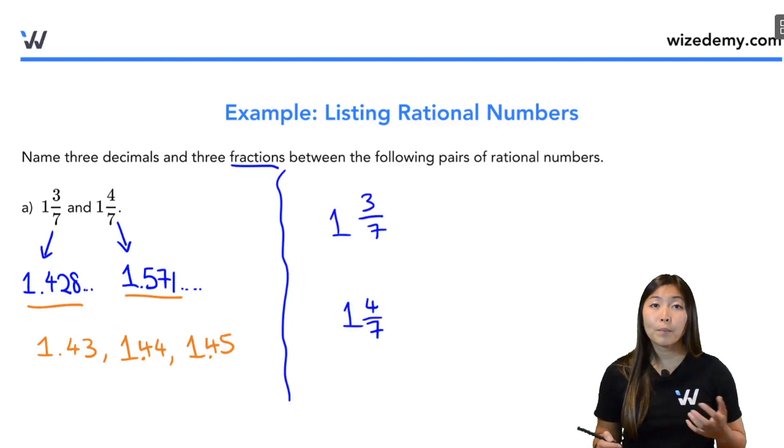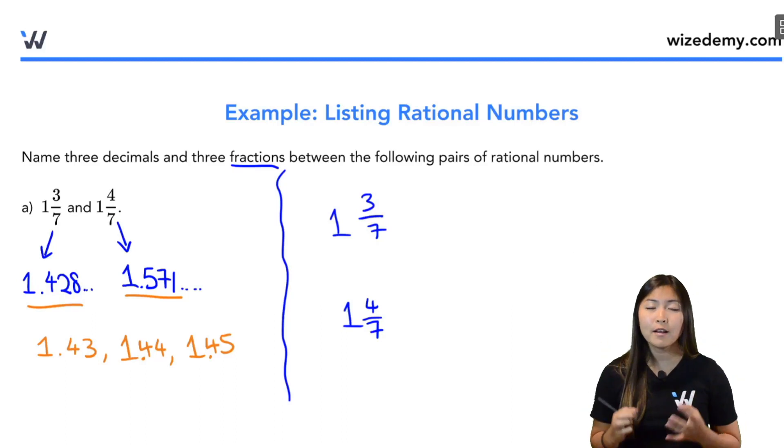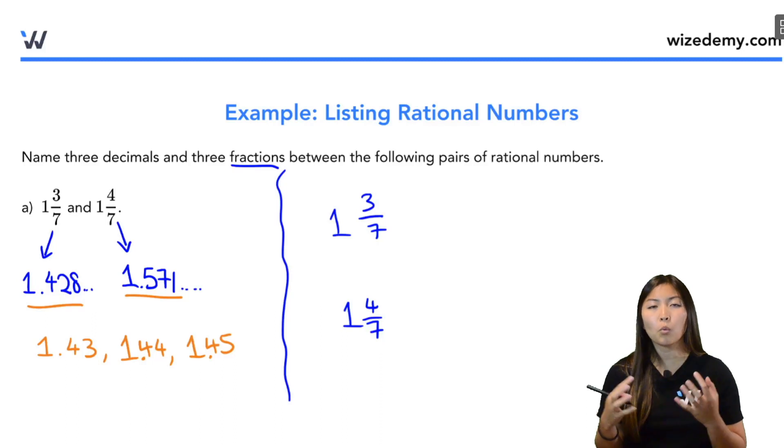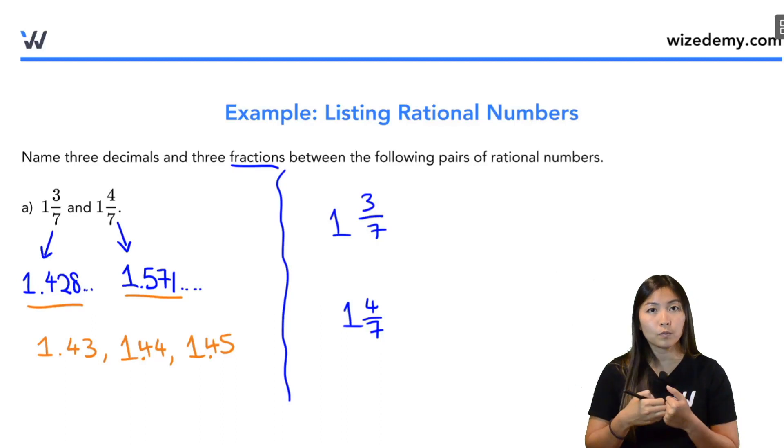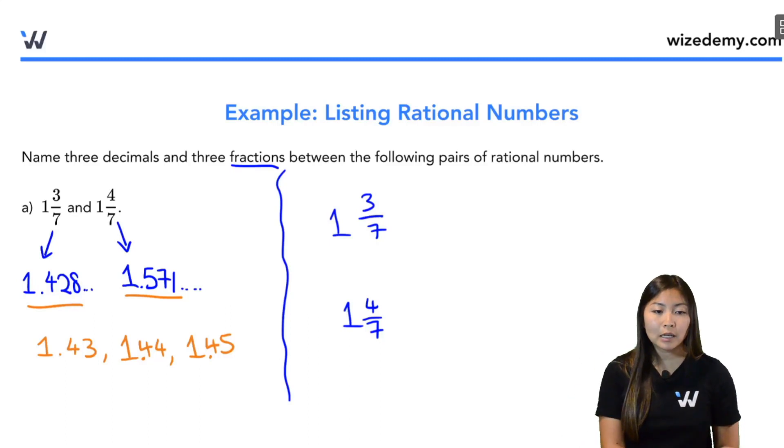If you were to draw a picture like a pizza to showcase that 3 over 7 and 4 over 7 fraction part, it might be a little bit hard for you to spot what fractions would be between the two. So instead, I'm going to make the fraction part look a little bigger so it's easier for us to find fractions in between them. So the trick here is to multiply the top and bottom, meaning numerator and denominator of all of these fraction parts by the same number.